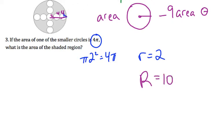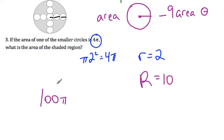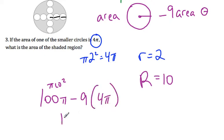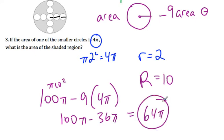To make it clear: you have a diameter of 4, another diameter of 4, and then another radius, giving a big radius of 10. So the area of the big circle is pi times 10 squared, which is 100 pi, minus 9 times the area of the small circle, which is 9 times 4 pi equals 36 pi. So 100 pi minus 36 pi equals 64 pi.